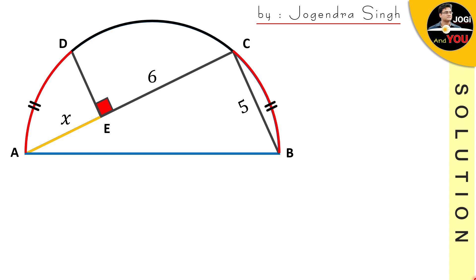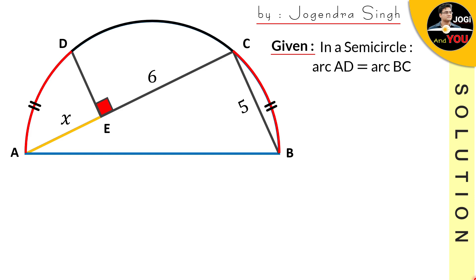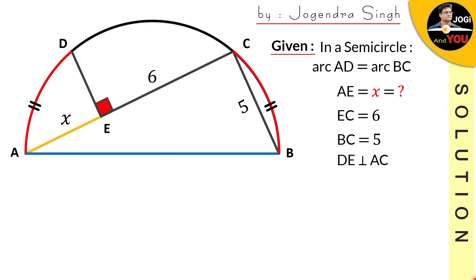Maybe you have seen a lot of such questions before. Let's see what information is given. We have a semicircle. First, we have two arcs in red color which are equal, and then we have the value of X to find. For getting the value of X, we have EC equal to 6, and BC equal to 5. We also have a perpendicular DE on AC, so this angle is definitely 90 degrees.